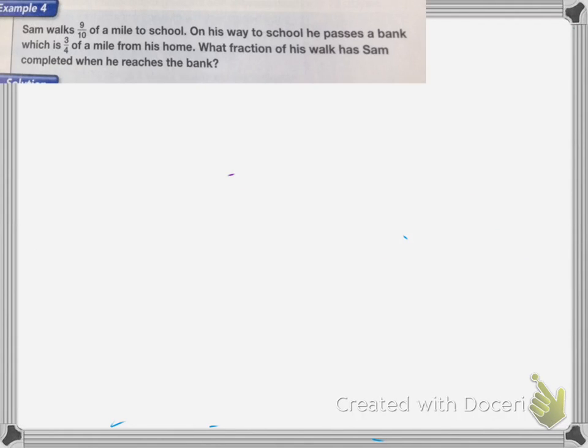With this problem, we have Sam walking nine-tenths of a mile to school. On the way to school, he passes a bank, which is three-quarters of a mile from home. What fraction of his walk has he completed when he reaches the bank? So what we're thinking is the part is the three-fourths of the mile, and I'm going to divide that by the nine-tenths of a mile that he's going to be walking.